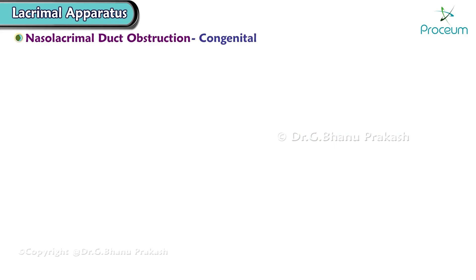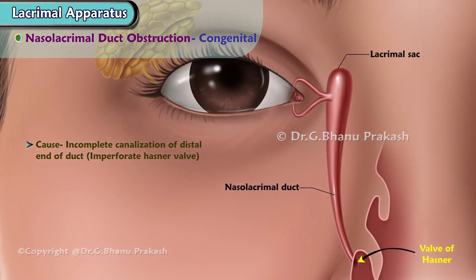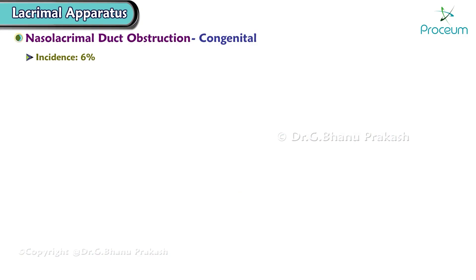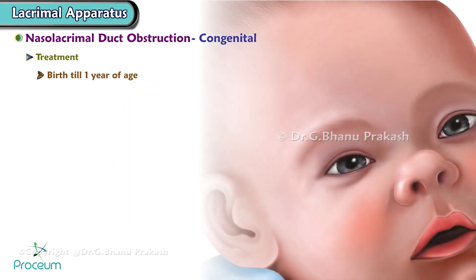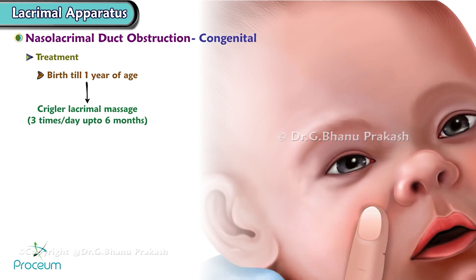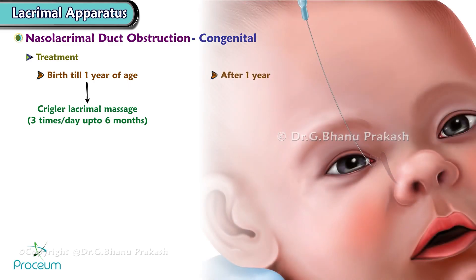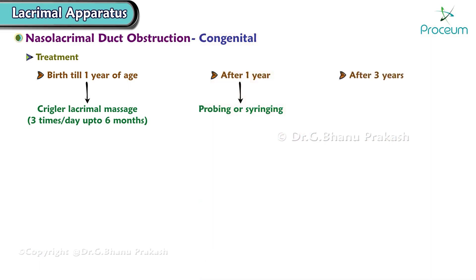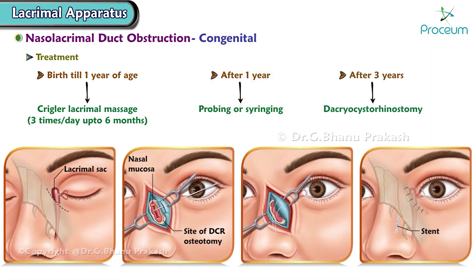Congenital nasolacrimal duct block is commonly caused by incomplete canalization of the distal end of the duct — imperforate Hasner valve. Incidence is 6% and only 5% have symptoms like epiphora and swelling. Treatment: From birth to 1 year — Krigler lacrimal sac massage 3 times per day up to 6 months. After 1 year — probing or syringing can be done. After 3 years — dacryocystorhinostomy can be performed.